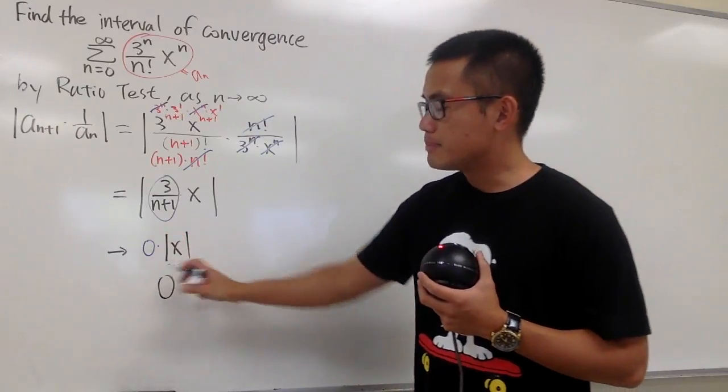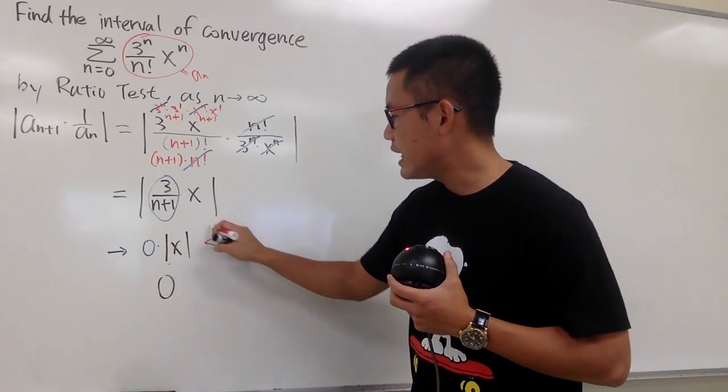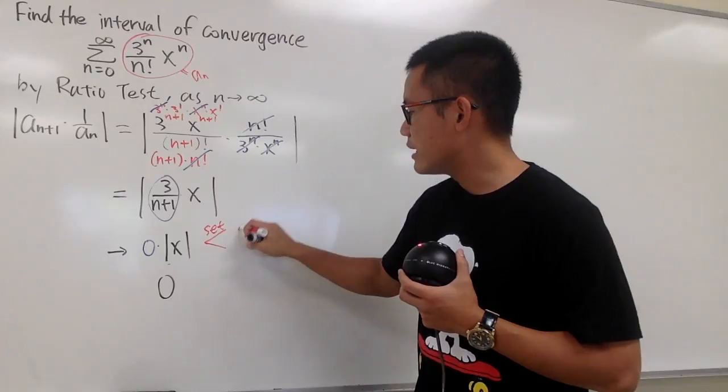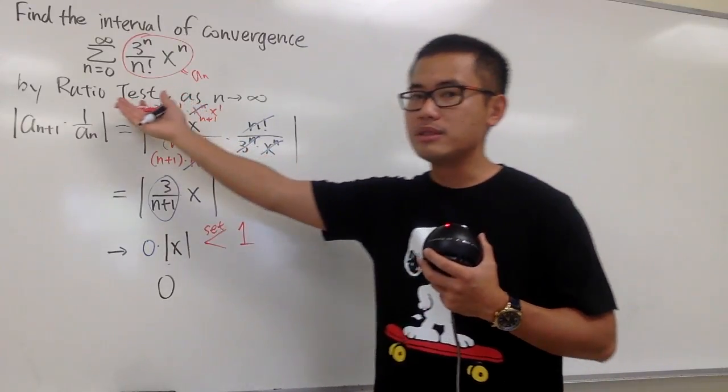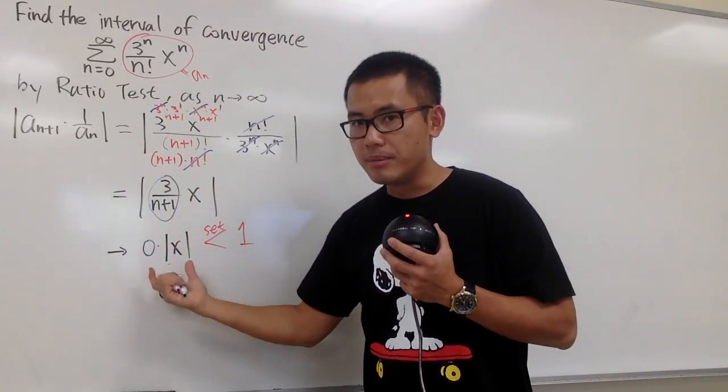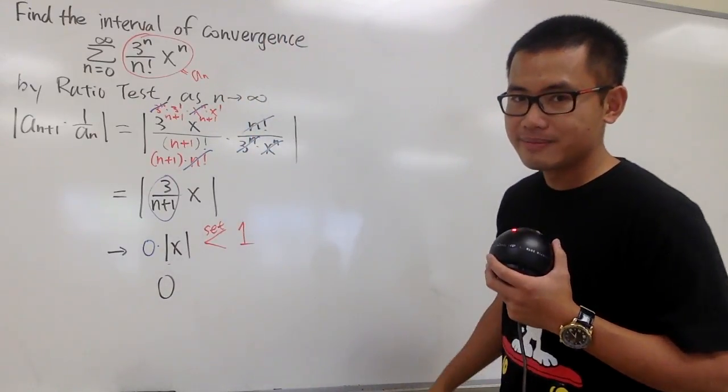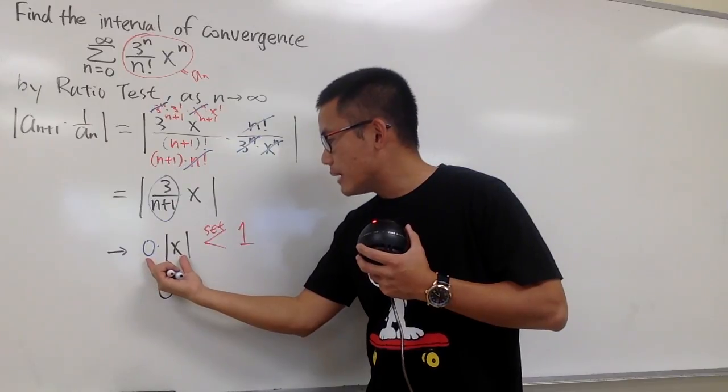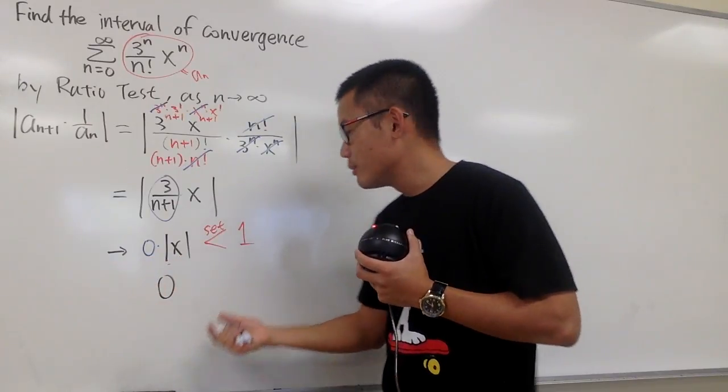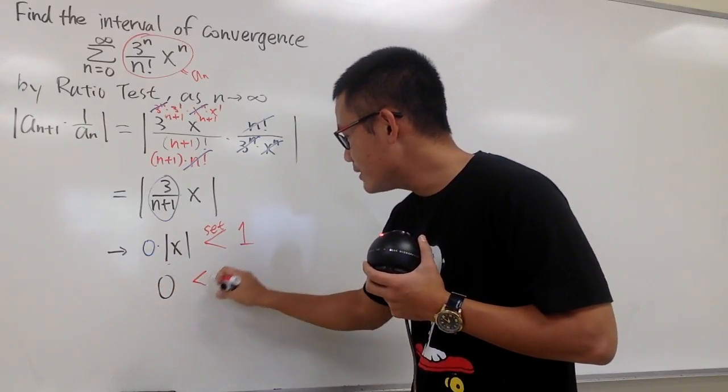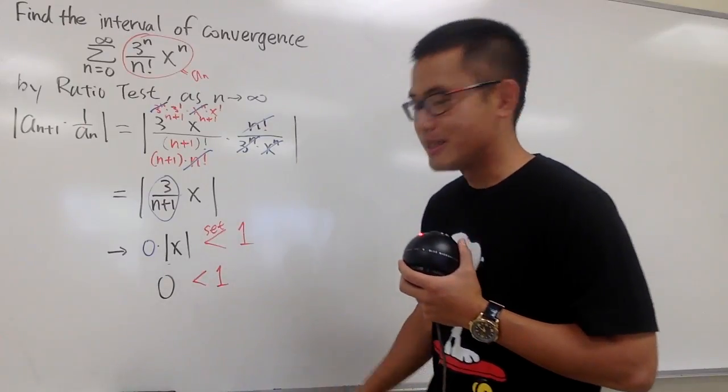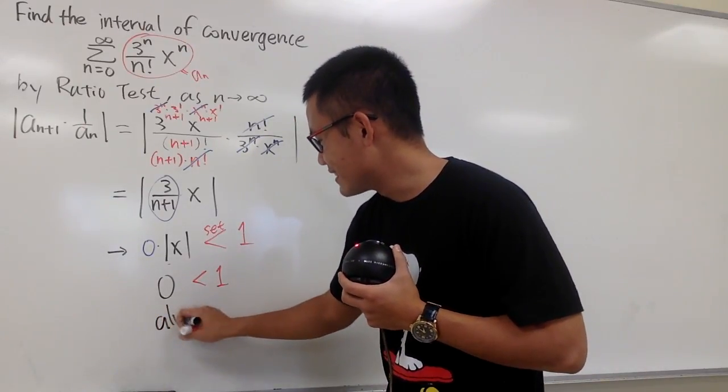And usually, at this point here, I will tell you to set this to be less than 1, because we are using the ratio test. We have to make sure that the limit has to be less than 1 in order for us to get a convergent series. Because 0 times absolute value of x is always 0, and 0 is always less than 1. This is true, always true.